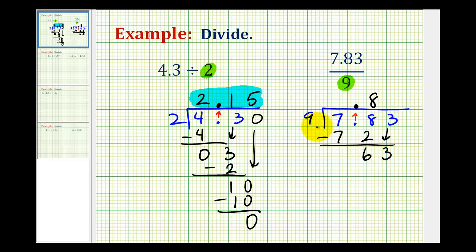And now we ask how many 9's there are in 63. That would be 7. 7 times 9 is 63. This difference is zero. We've used all of the digits, so we're done. So this quotient is equal to .87, or 87 hundredths.